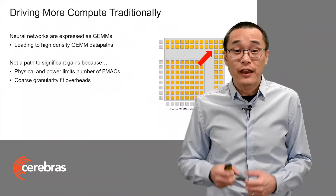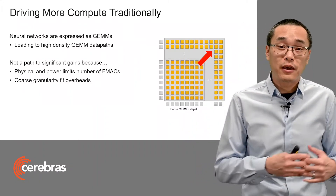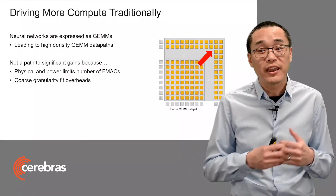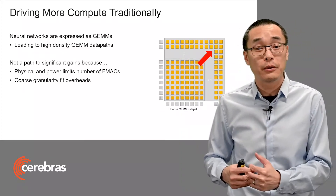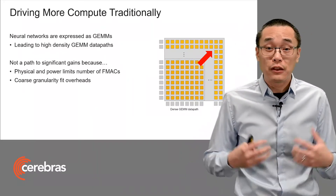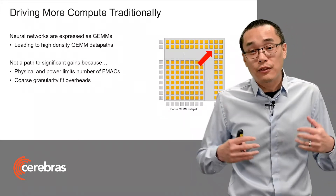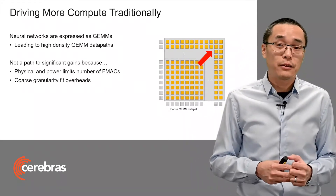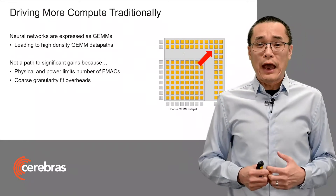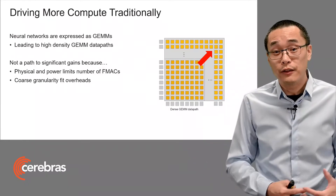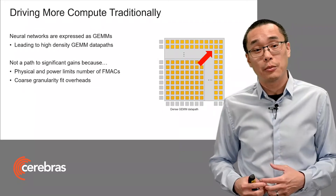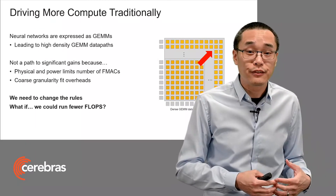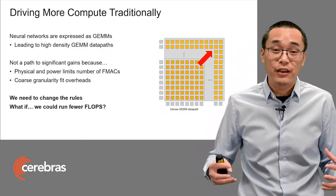Unfortunately, I think that's unlikely. That's because the physical and power considerations mean that you can only fit so many FMAC circuits on a single chip. And as you build larger and larger GEMM data paths, the larger the penalty is if the workload doesn't fit the data path exactly. In fact, as the data path grows in size, the utilization can actually drop. So to get significant gains, we think you need to change the rules.